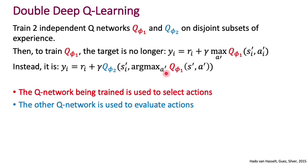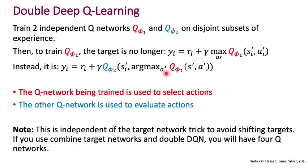One thing to clarify: this looks a lot like the target network trick, where we also had a second Q-network — but in that case we were using a stale Q-network from a few iterations ago to avoid shifting targets. The double DQN trick is independent of the target network trick, and you can combine both. If you combine the target network trick with double DQN, you will effectively have four Q-networks: an old copy of Q-phi-one and an old copy of Q-phi-two to serve as the target networks.